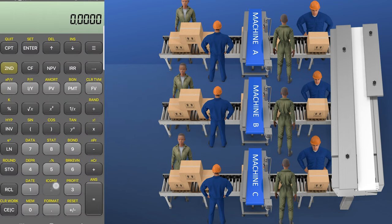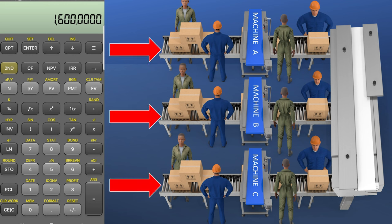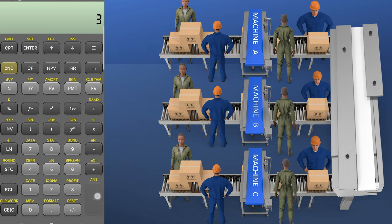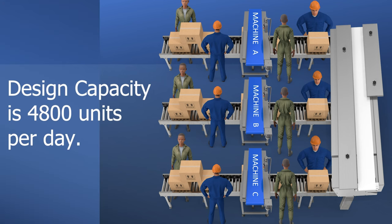Doing 200 units per hour over an eight-hour workday: multiply 200 times 8, giving us 1,600 units. But we have three departments, each producing 1,600 units, so multiply by three — that gives us a total of 4,800. Our design capacity is 4,800 units.